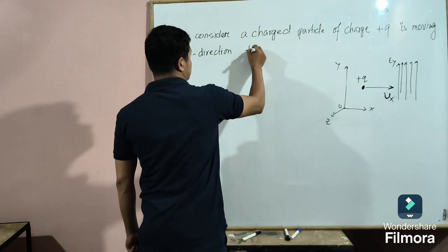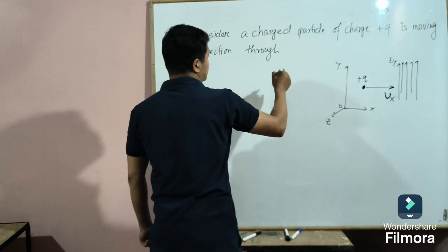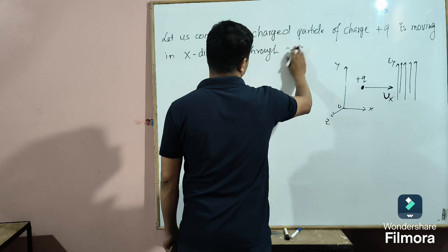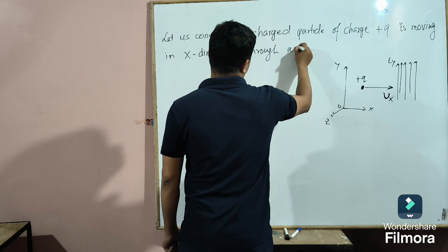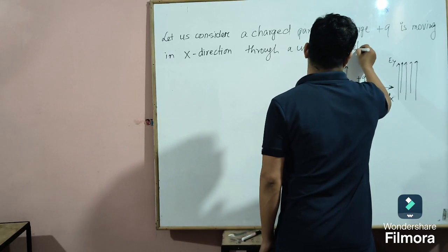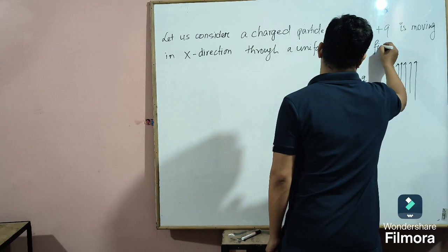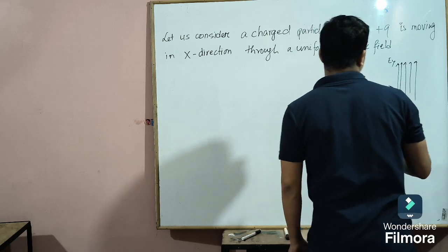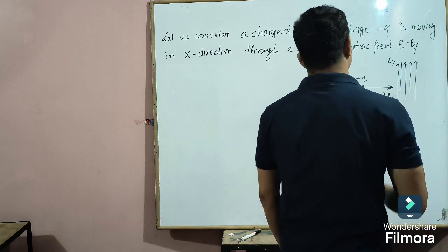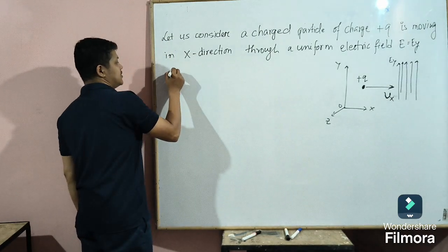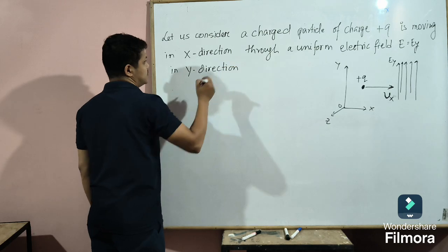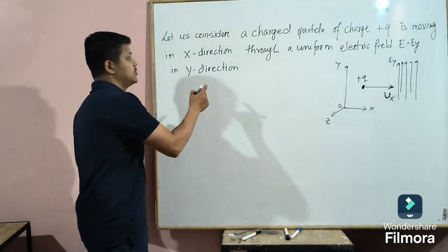The particle is moving through a uniform electric field E, which is equal to EY, because it is directed along the Y axis, in the Y direction. The electric field is in the Y direction, so its X and Z components will be zero, and it has only a Y component because it is directed along the Y axis.